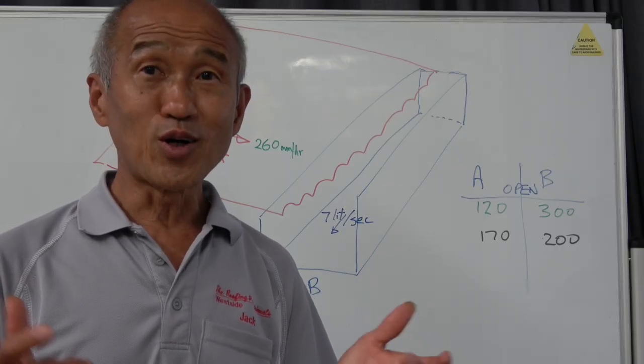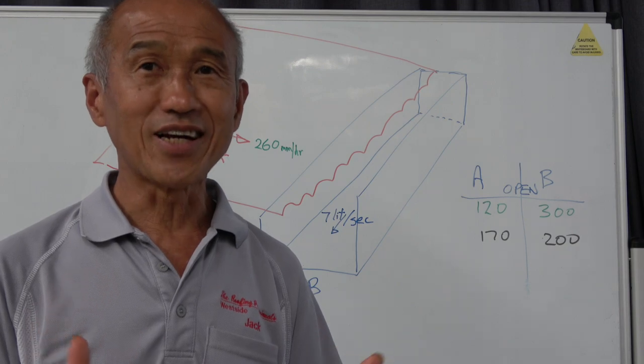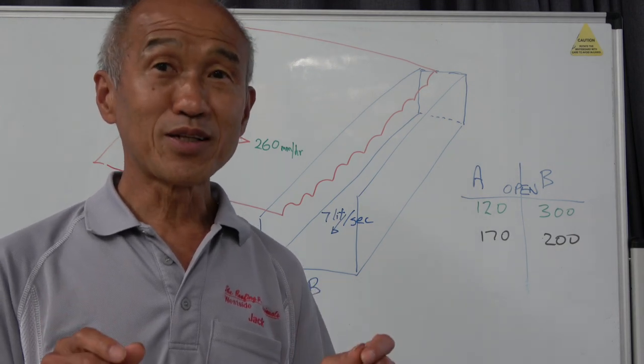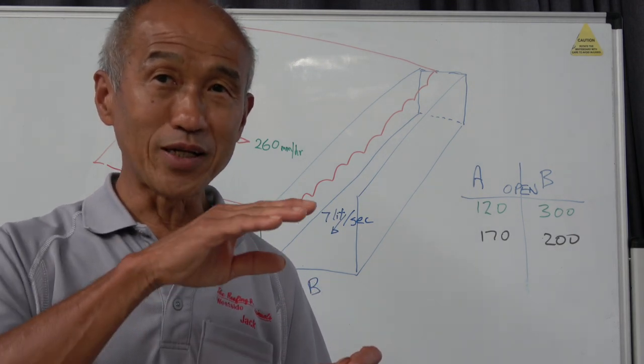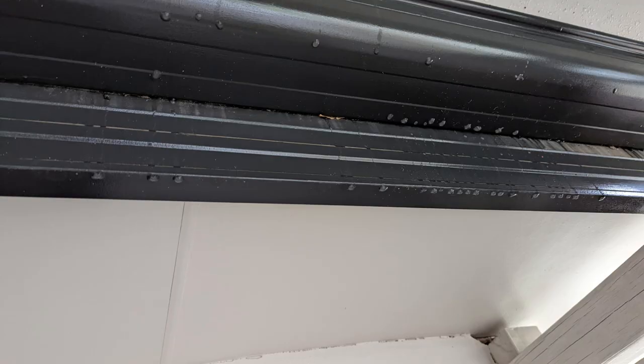Now the answer to the first question always is, if you can help it, don't have a box gutter. It's always better to have water flow into a normal eaves gutter that can overflow external to the building and you don't have any overflow issues.